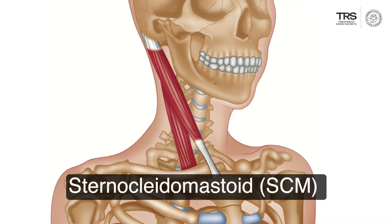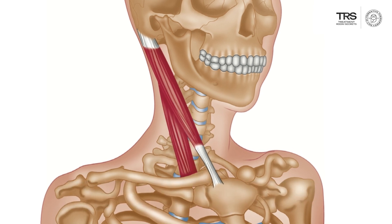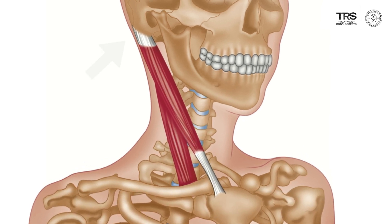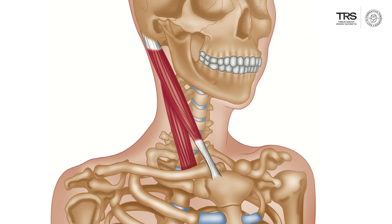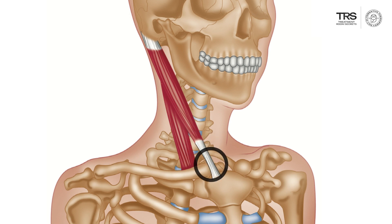We're now going to look in greater detail at the anatomy of this very interesting muscle. The muscle inserts into the mastoid bone, and you can see it's a very short tendon and quite a broad insertion. Then it divides into two separate divisions. The first runs more superficially and attaches here into the sternum, which is the breastbone.